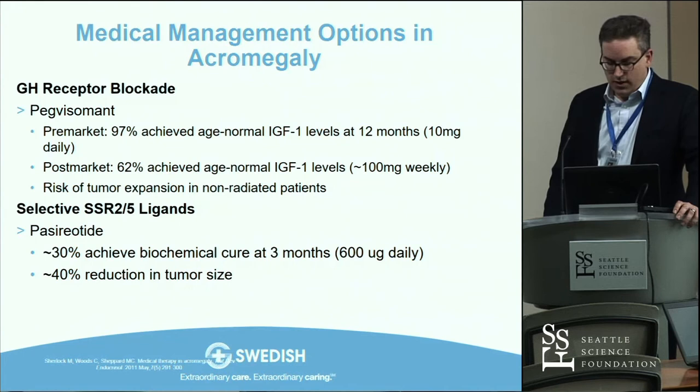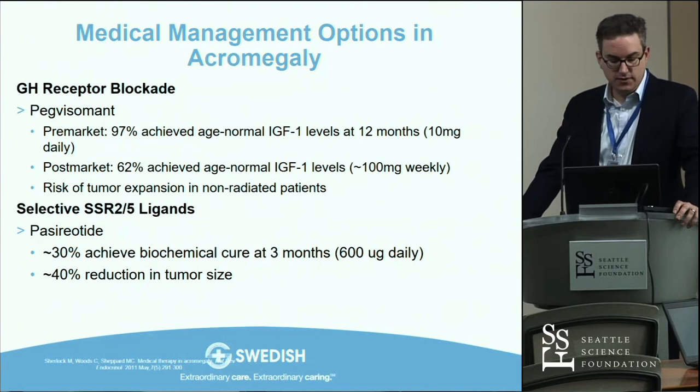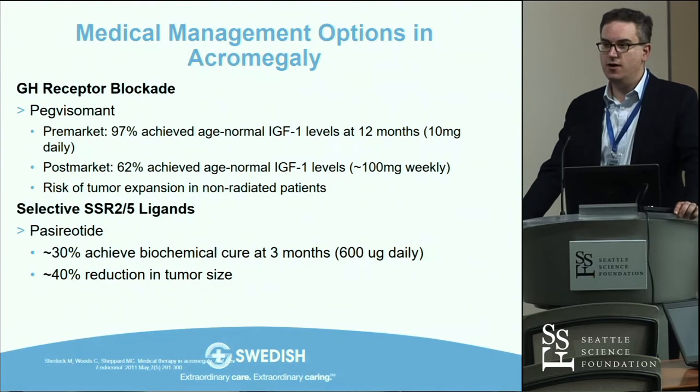More recently, pegvisomant was developed — a growth hormone receptor blocker that can normalize IGF-1 levels in about two-thirds of patients. Interestingly, in the pivotal approval study it was almost 100% effective, but post-market data showed about 62% efficacy — patient selection was more strict during the trial, and once on label every endocrinologist gave it to all acromegaly patients regardless of study criteria.